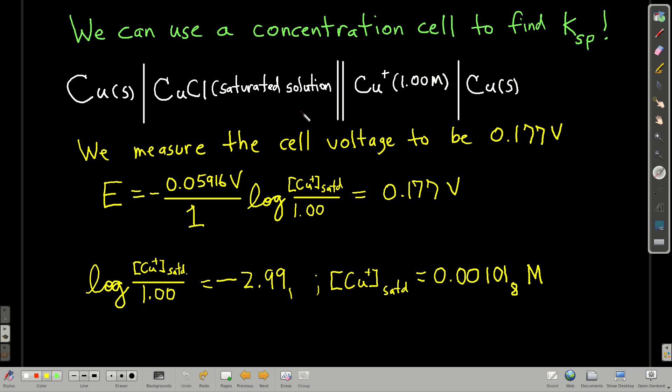So let's say we set up this cell, measure the cell voltage. It ends up that's 0.177 volts for this setup right here. So we can plug into the Nernst equation. Once more, because this is a concentration cell, E zero is equal to zero. And we just have E equals negative 0.05916.